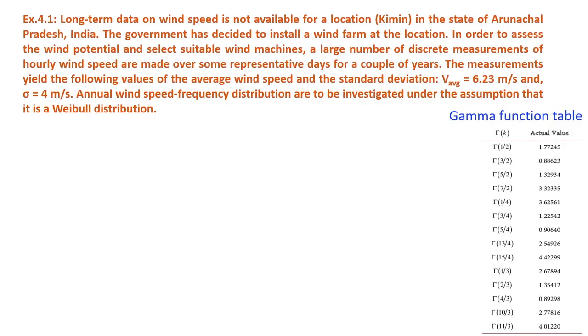Let us now solve one problem. Long-term wind speed data is not available for a location — say for example, location is Kimmin in the state of Madhya Pradesh, India. The government has decided to install a wind farm at the location. In order to assess the wind potential and select a suitable wind machine, a large number of discrete measurements of hourly wind speed are made over some representative days for a couple of years. The measurements yield: average wind speed v̄ = 6.23 m/s and standard deviation σ = 4 m/s. The annual wind speed frequency distribution is to be investigated under the assumption that it follows a Weibull distribution.